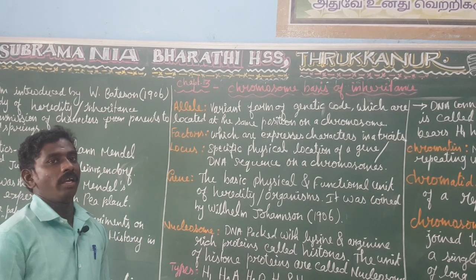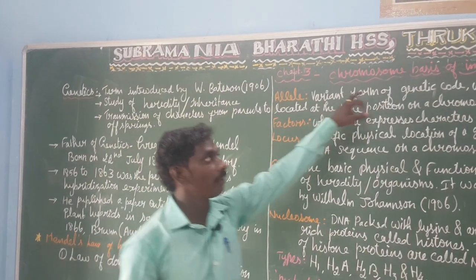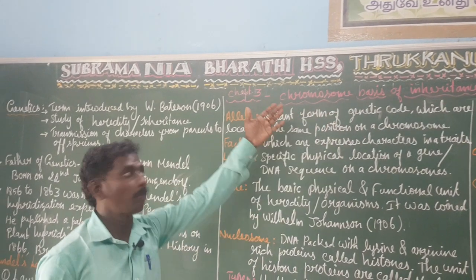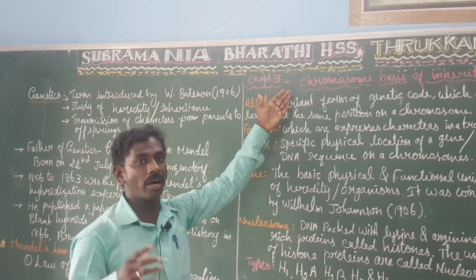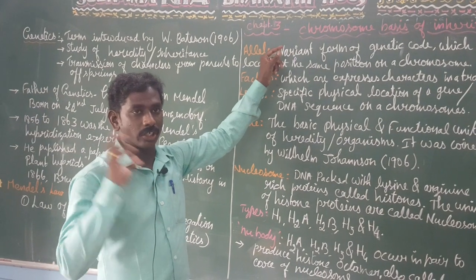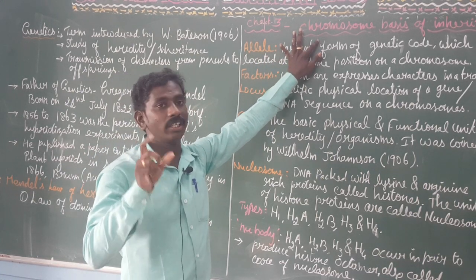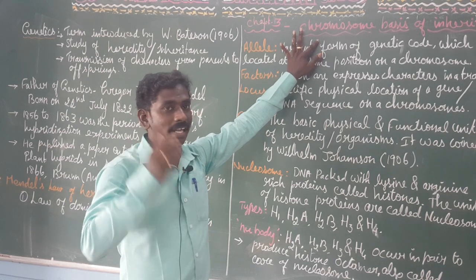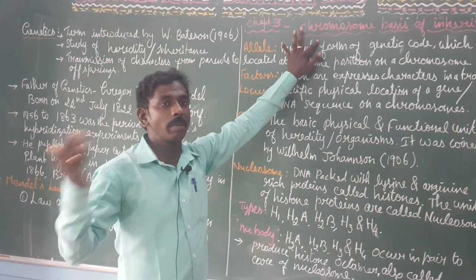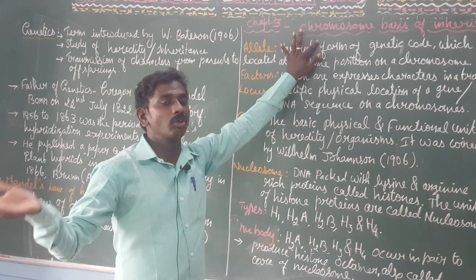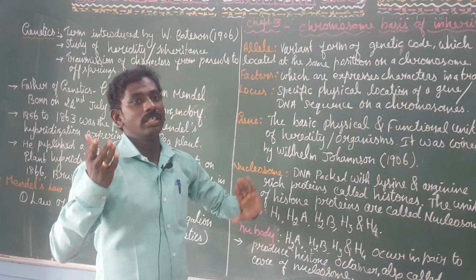Good morning students. In this class we have to see the third chapter in your textbook: chromosome basis of inheritance. Chromosomes are very important for determination of the characters of each organism. Whether structural or functional, the characters of an organism are determined by chromosomes, and chromosomes carry characters from parents to offspring.